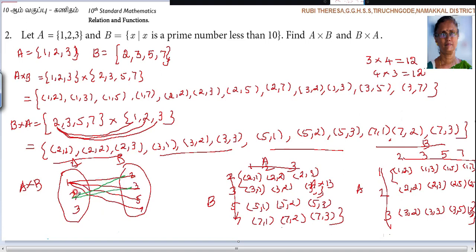Next, here 2. (2,2), (2,3), (2,5), (2,7). Next, (3,2), (3,3), (3,5), (3,7). Do you follow?